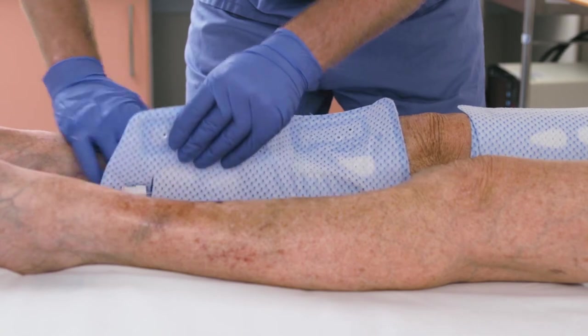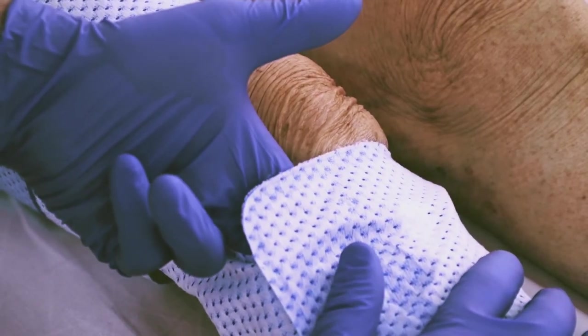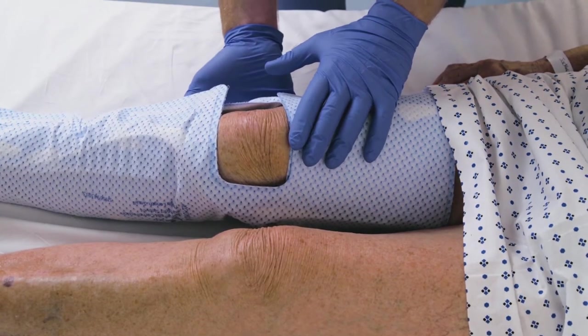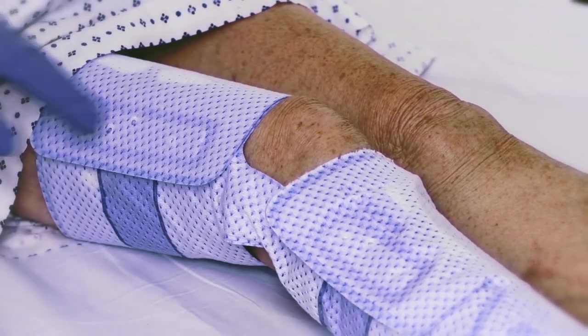Make sure to leave approximately two fingers of space between the deflated sleeve and the patient's leg. Ensure the gap in the thigh length sleeve is positioned at the patient's knee to avoid compression at the popliteal area.